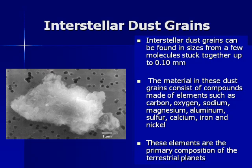The solid components of the interstellar medium are dust grains. When we think of dust, we think of particles large enough to be seen with the eye, but interstellar dust grains are actually much smaller — they can be just a few molecules stuck together, where the largest would be about a tenth of a millimeter. The dust grains are mainly made out of heavier materials: carbon, oxygen, sodium, magnesium, aluminum, sulfur, calcium, iron, and nickel, where oxygen combines with these other elements to form solids.